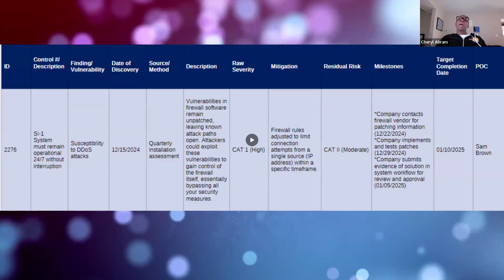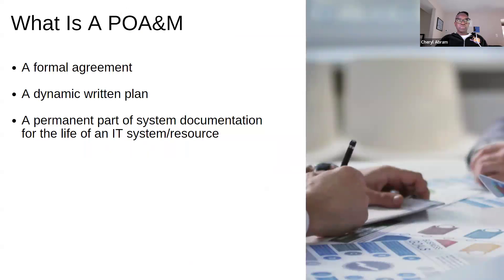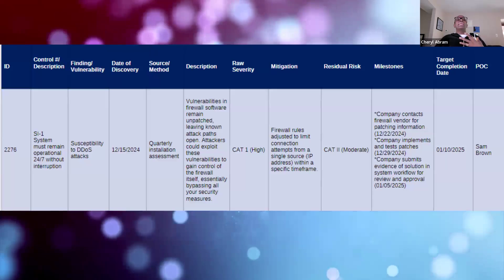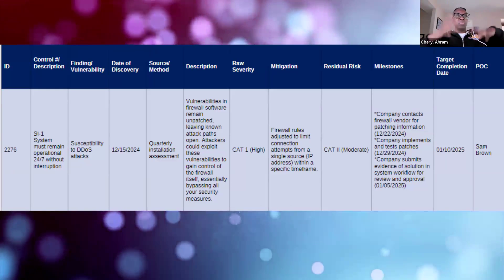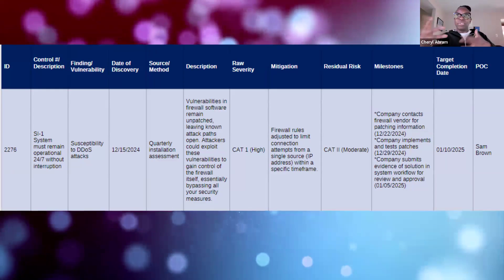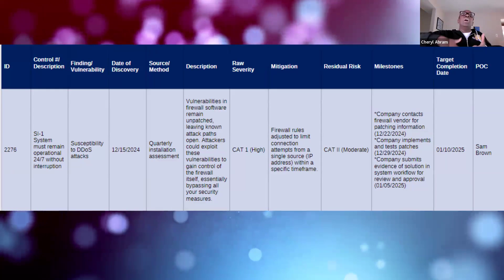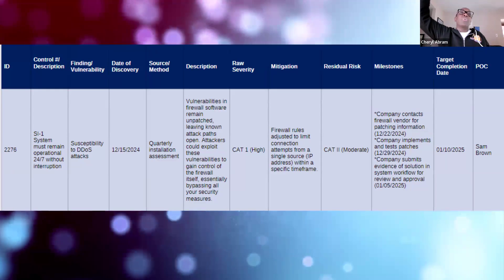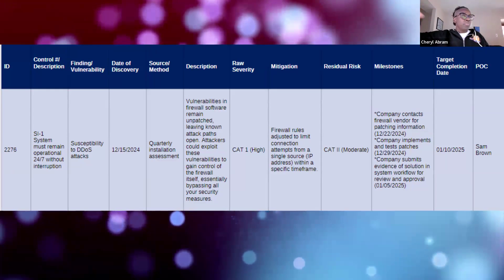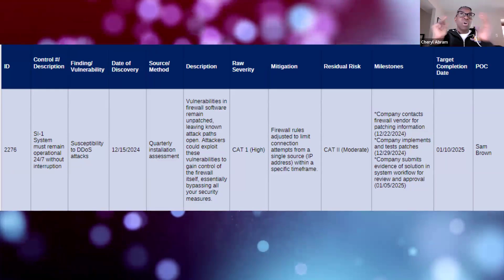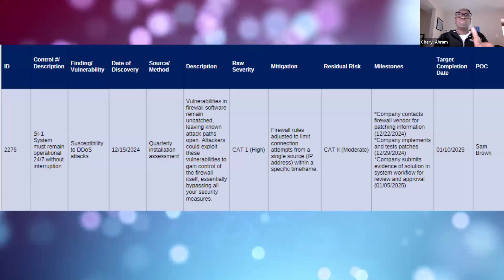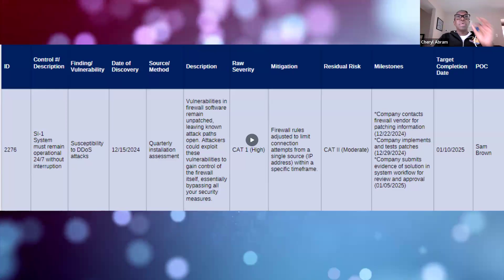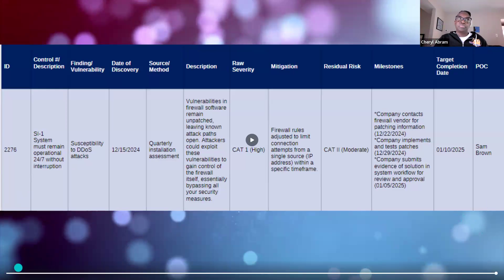This is a POAM item or entry. What I didn't understand at first was when people would talk about a POAM, I pictured a long document with a bunch of stuff on it — and that's true. There can be hundreds, sometimes thousands of vulnerabilities that a system has to address. But just one of these vulnerabilities is also a POAM. When I say POAM, this is what I'm talking about.